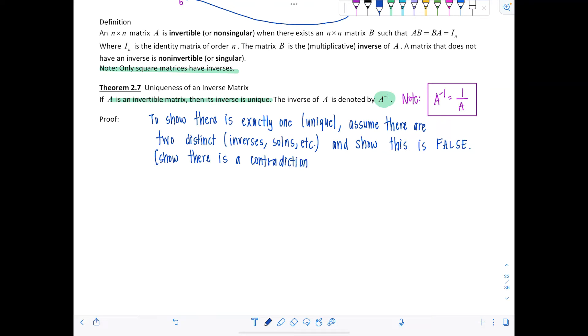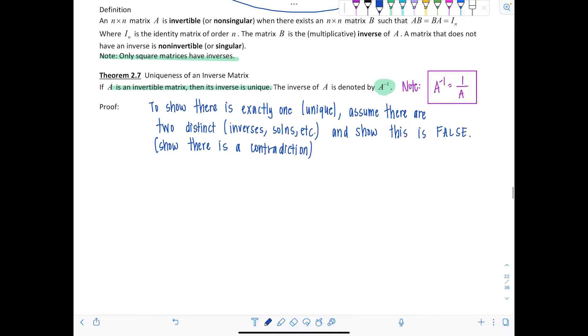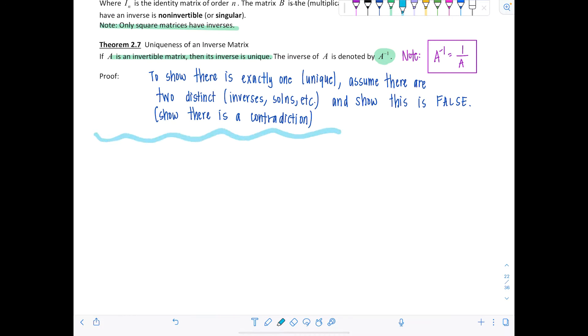You essentially use this proof technique when you're trying to show uniqueness. So if you try to show there's exactly one inverse for matrix A, you assume that that's not true. You assume that there's two, and then you show why you run into a problem. So here we go. Let B and C be two different inverses of A.